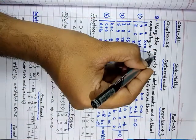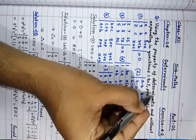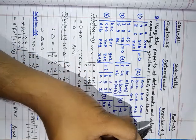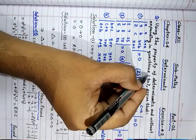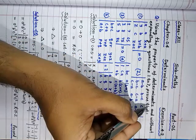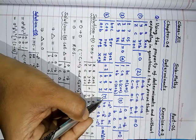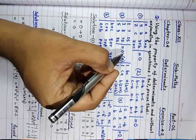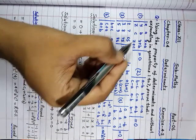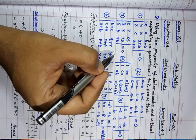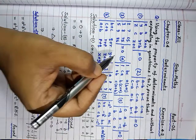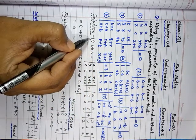Using the property of determinants and without expanding in questions 1 to 7, prove that there are 7 parts in the question. And without expanding, you have to prove all the parts. Now, solution of the first part.